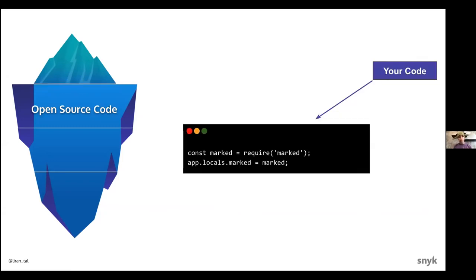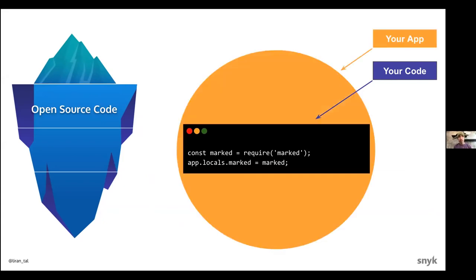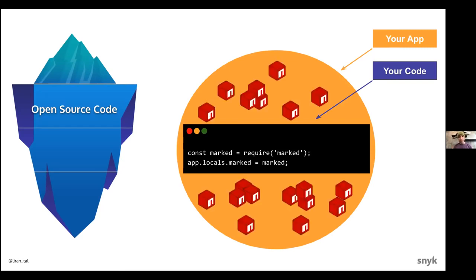Here's a mental exercise summing up this open source world. Imagine you're building an app — this could be a Node.js app or something else. Your mental image of your application is focused on the code you write. You spend hours debugging it, refactoring it, and testing it. But really the reality is a little bit different. The code we're actually building is significantly smaller than the mental image you have of the application itself, because the application is actually relying on a lot of community-powered code. We're leveraging this beautiful open source world which boosts our productivity, but we need to be aware of what's going on there.